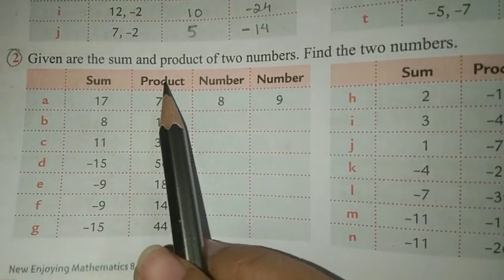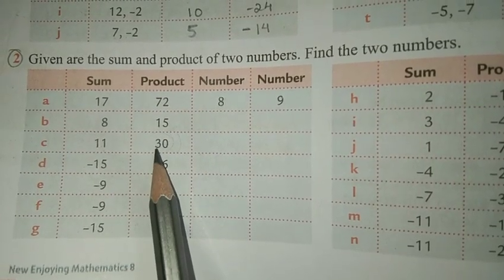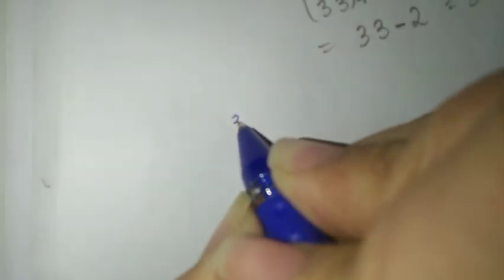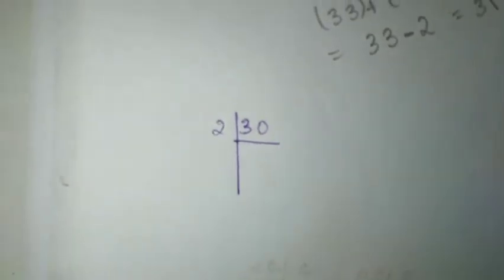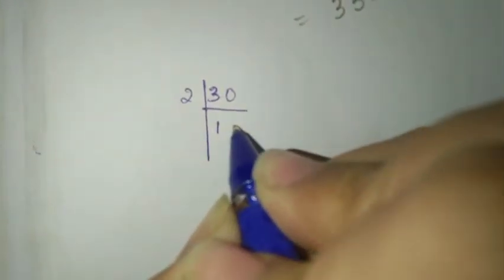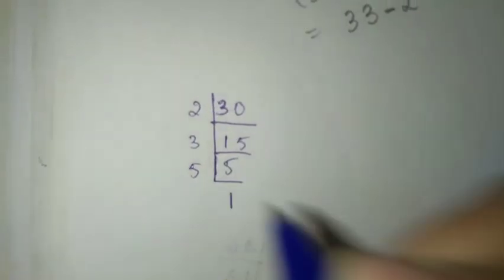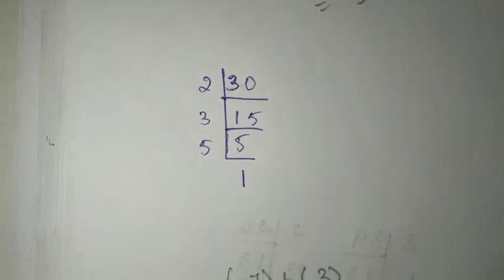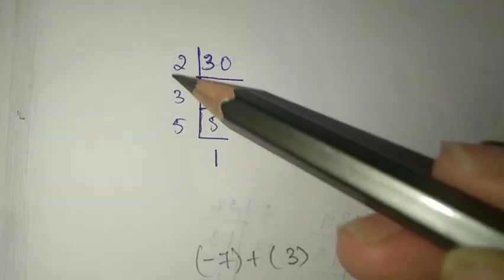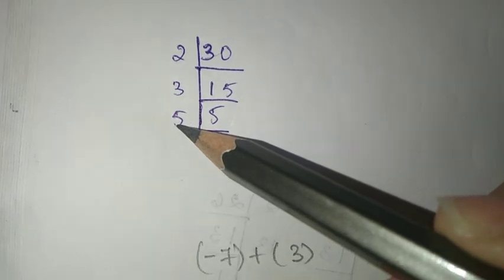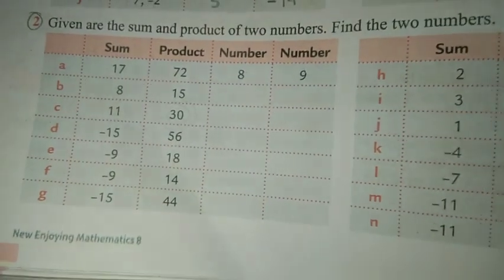Let's start with sub number C. The product is 30, the sum is 11. So the first thing we should do is find the factors of the product using prime factorization. The factors are 2, 3, and 5.